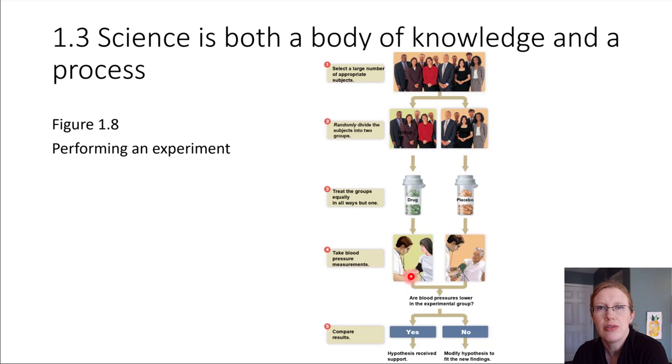If yes, if the drug group has lower blood pressure, then that's going to provide support for our hypothesis. If no, if the blood pressure readings are about the same, then that suggests our hypothesis needs to be modified. So those are just some little details about actually performing the experiment. How would that be done?